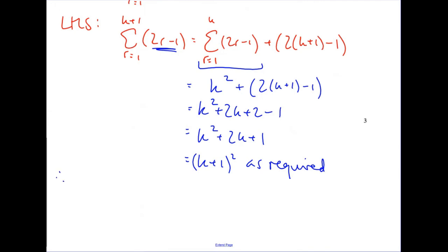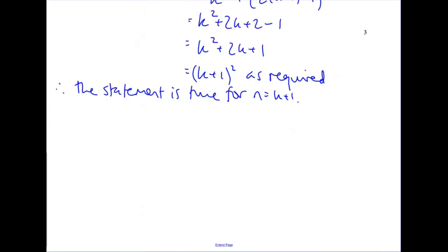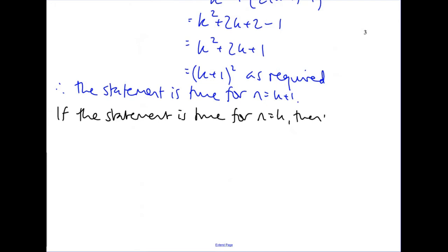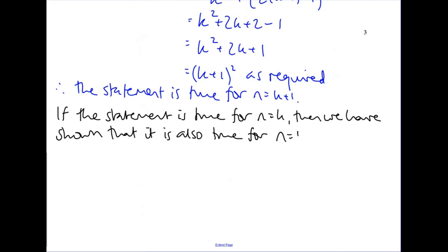This shows that if n equals k is true, then n equals k plus 1 is also true. Finally, write out your conclusion at the end: if the statement is true for n equals k, then it is also true for n equals k plus 1.